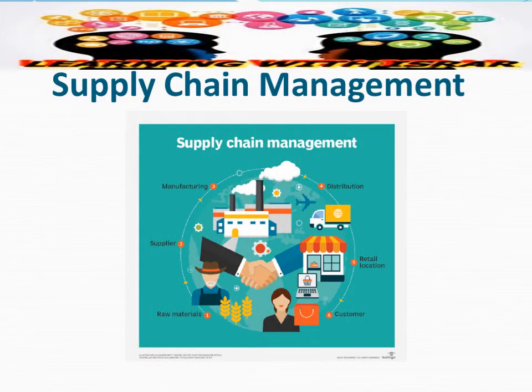Let's first talk about supply chain management. Supply chain management is the management of the flow of goods and services, and it includes all processes that transform raw materials into final products. It also involves the active streamlining of a business's supply side activity to maximize customer value and gain a competitive advantage in the marketplace. That is the basic definition of supply chain management. Now let's go from supply chain management to ERP in the next slide.